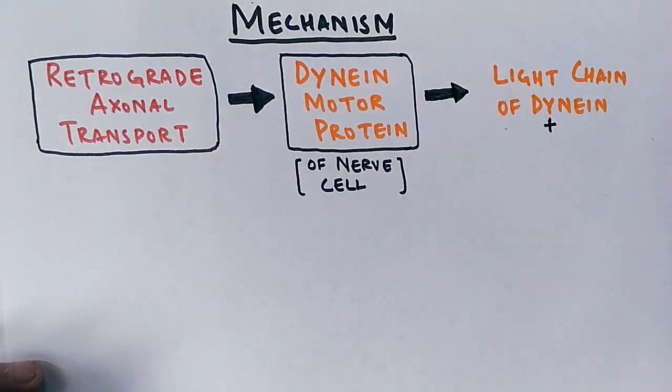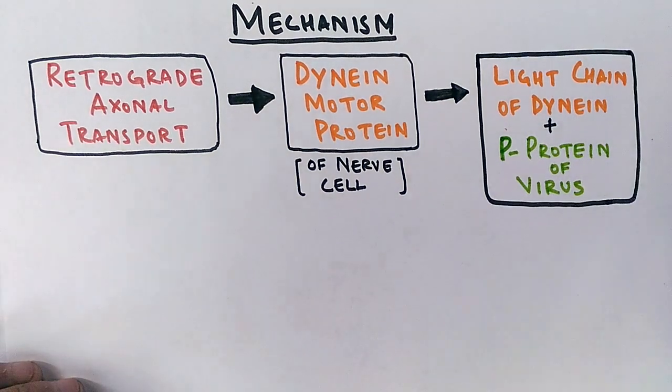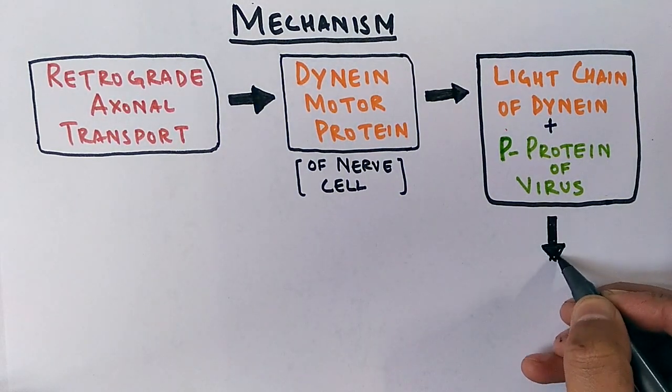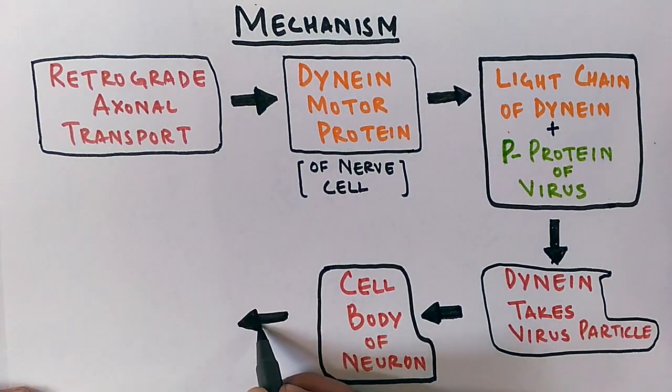So it exploits this way to get into the nervous system. By this dynein protein it takes virus particles inside the cell, and inside the cell the replication and transcription takes place.